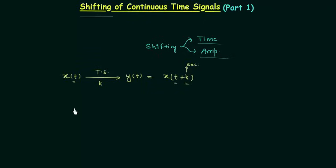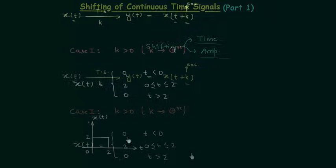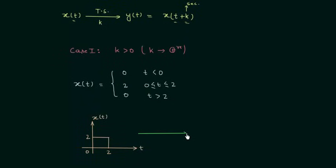Now depending on k we have two cases. In case number 1, k is greater than 0, or we can say k is positive. The original signal x(t) is defined like this: it is equal to 0 when time t is less than 0; it is equal to 2 when time t is between 0 and 2; it is again 0 when time t is greater than 2. Once you plot this you will have a rectangular waveform, and now we will perform the time shifting.